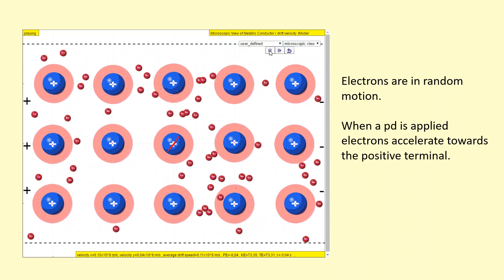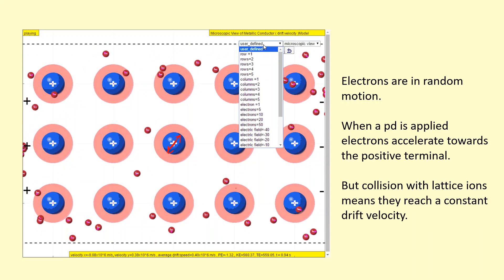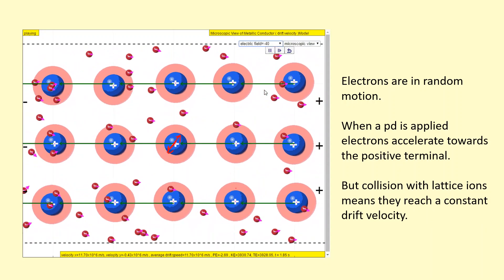But you see the positive ions here, the lattice ions, are constantly vibrating. And because they're vibrating, the electrons are going to collide with them, and they eventually reach a constant drift velocity.